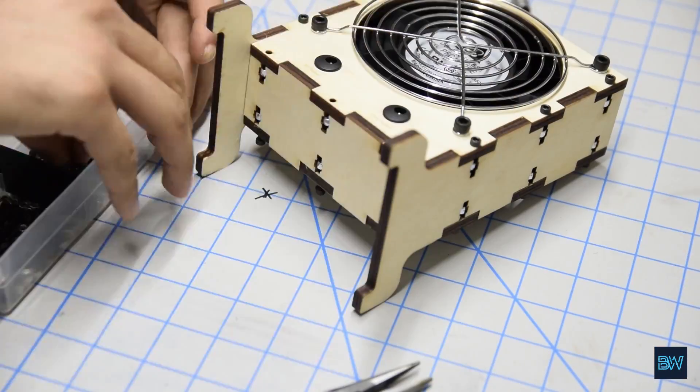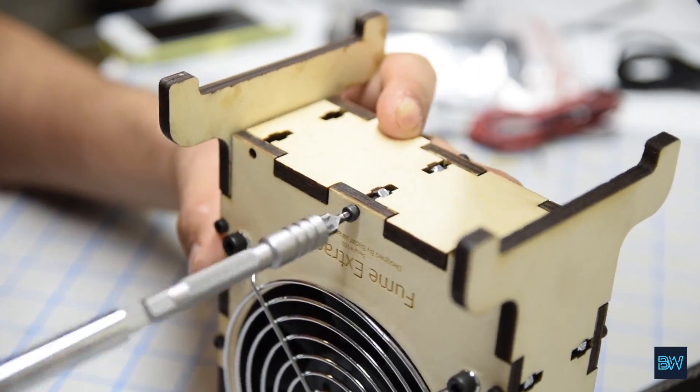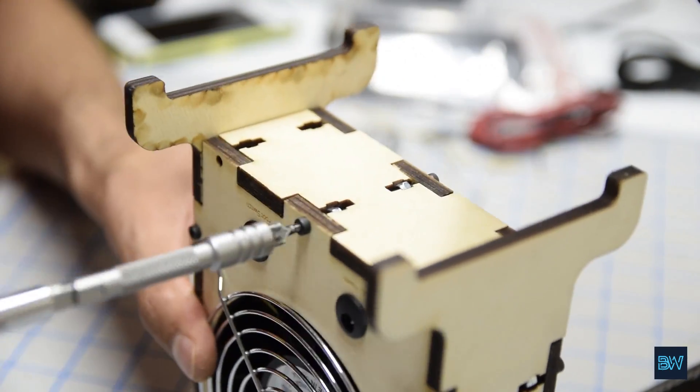Next, secure the bottom cover and tighten all the nuts, ensuring the fume extractor is stable when placed on a flat surface.